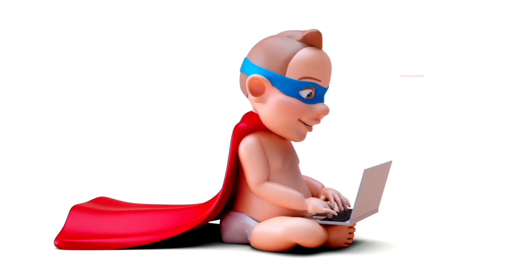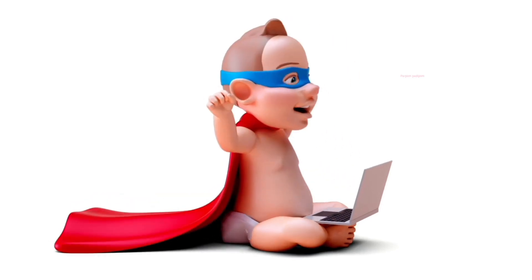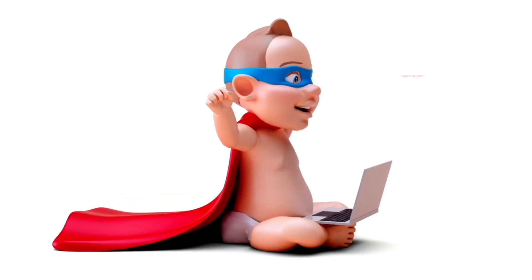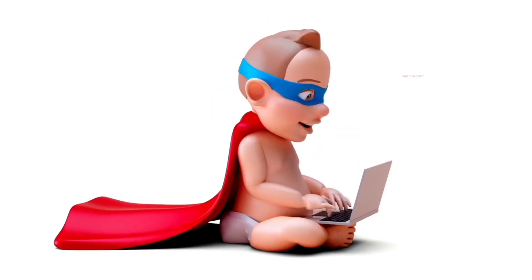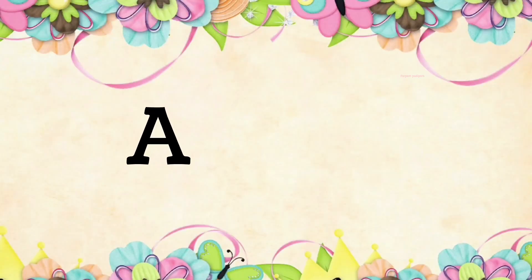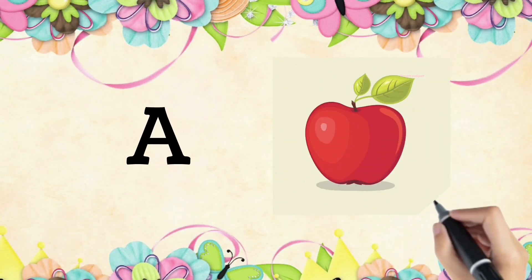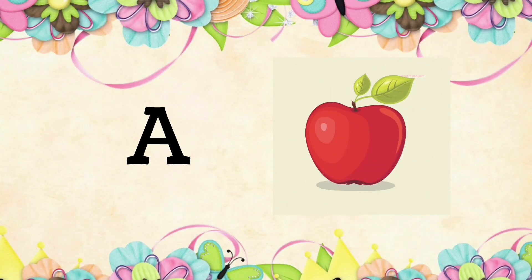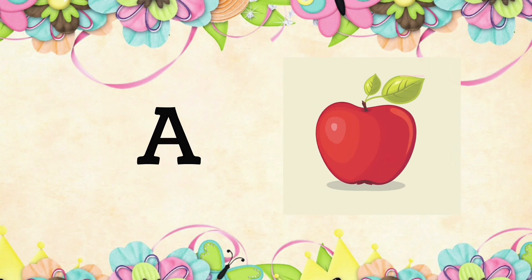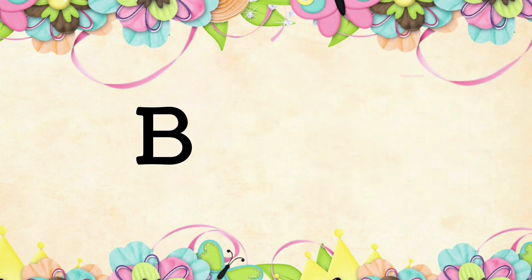Hello kids, welcome back to my channel Platform Party Poem. Today let's see about the alphabet. A is for apple, B is for ball.